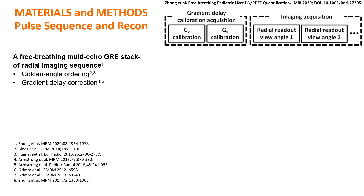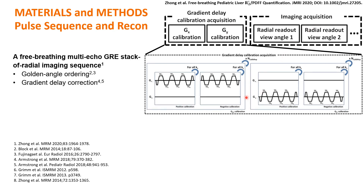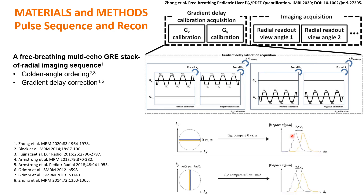This slide summarizes the PAL sequence and the reconstruction of the proposed method. This multi-echo GRE stack-of-radials imaging sequence consists of a gradient calibration acquisition module and an imaging acquisition module. The gradient calibration module acquires calibration lines crossing the K-space origin in the K-X and K-Y directions, then performs cross-correlations to calculate the gradient delay shift terms and uses them to correct the imaging K-space data.